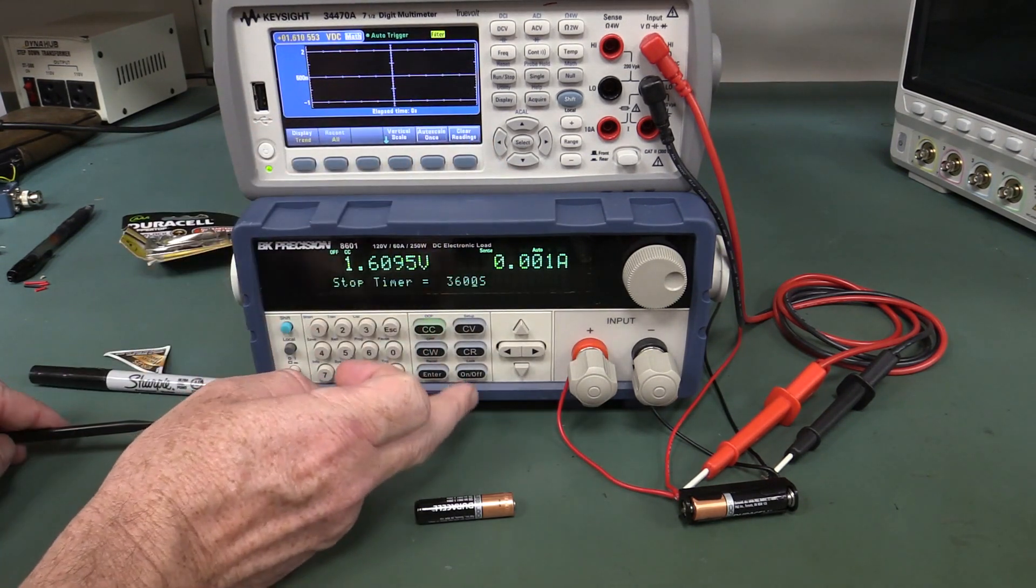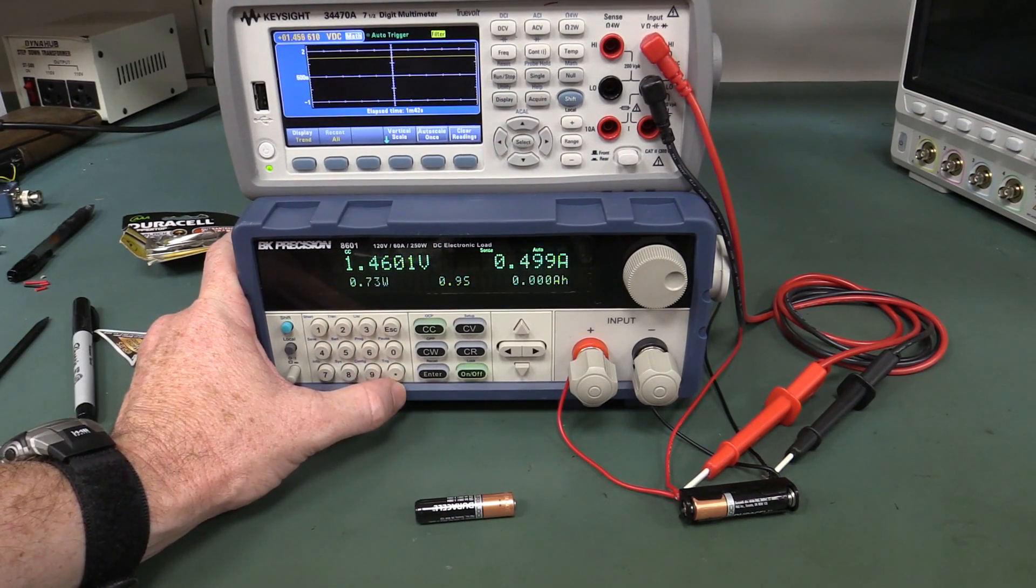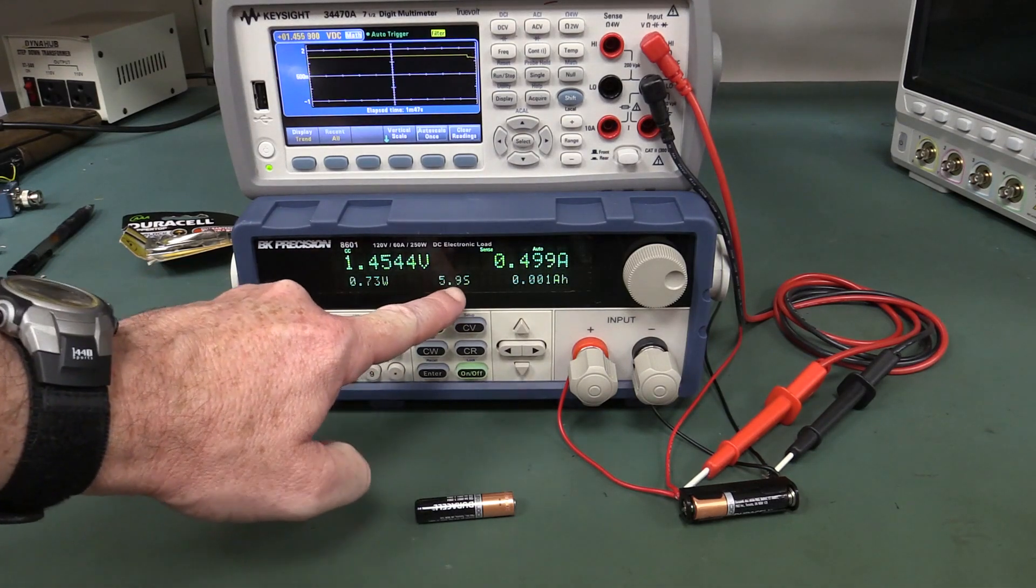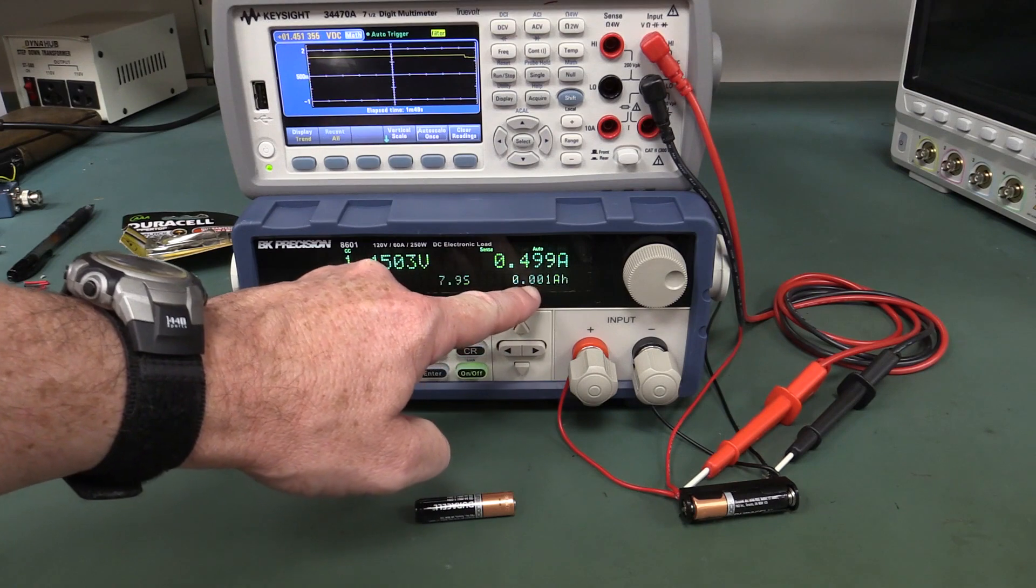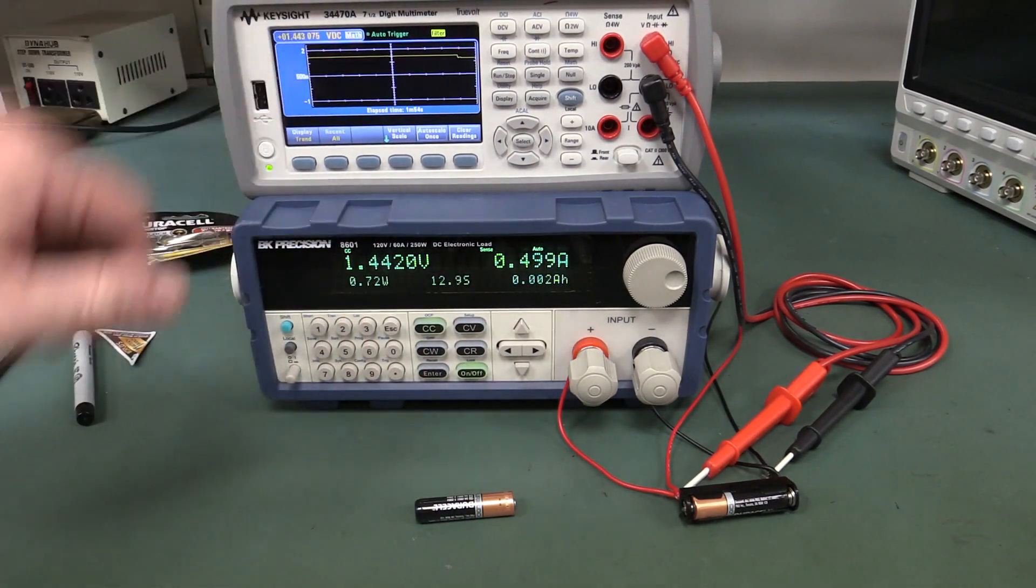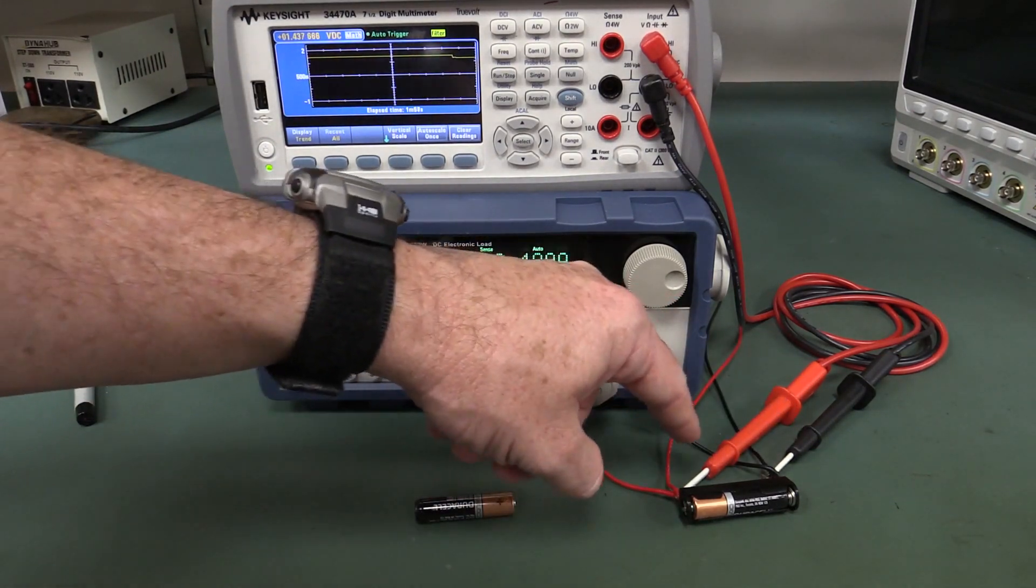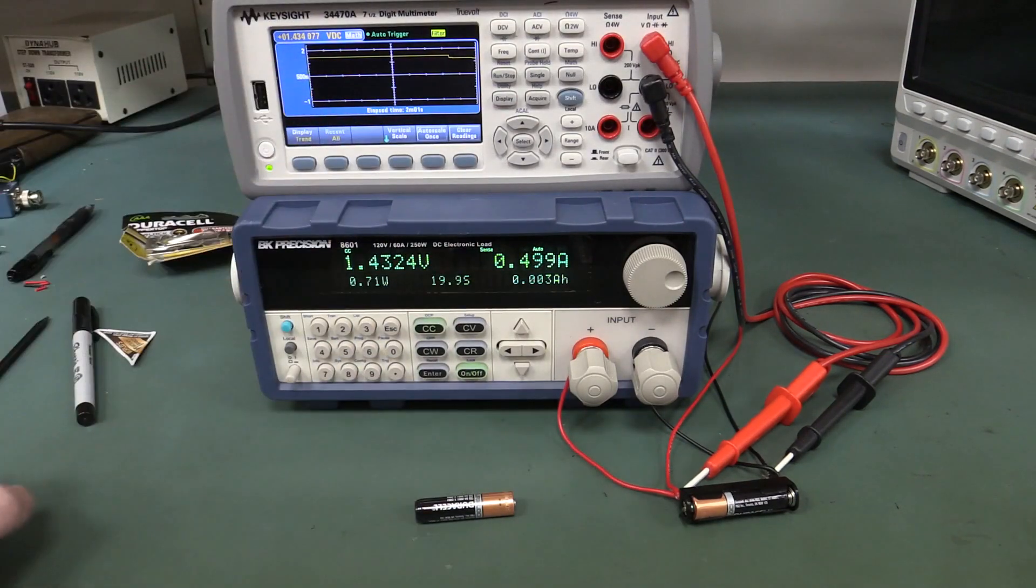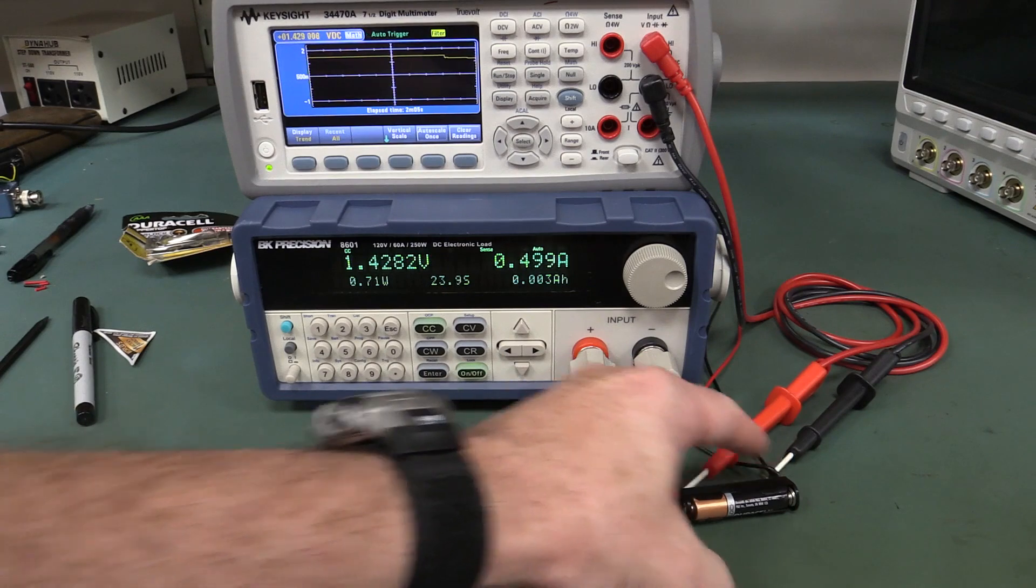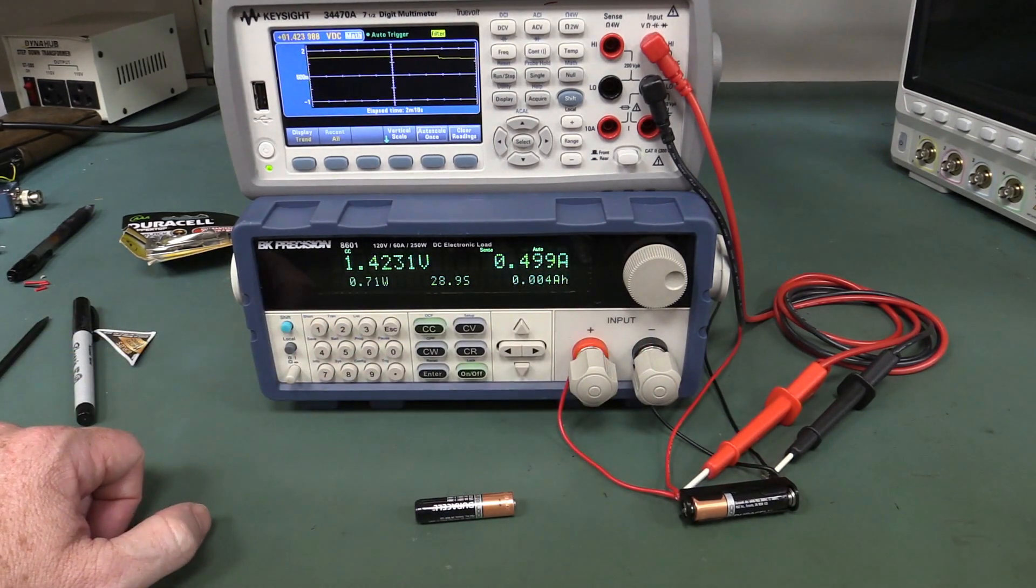I won't bore you with the details of actually showing you this, but I'm going to discharge at half an amp, set the stop voltage at 0.1 volts, and stop capacity at half an amp hour. By the way, yes it is a four terminal measurement. I've got the sense wires going around to the sense terminals on the back so we're getting the true battery voltage.